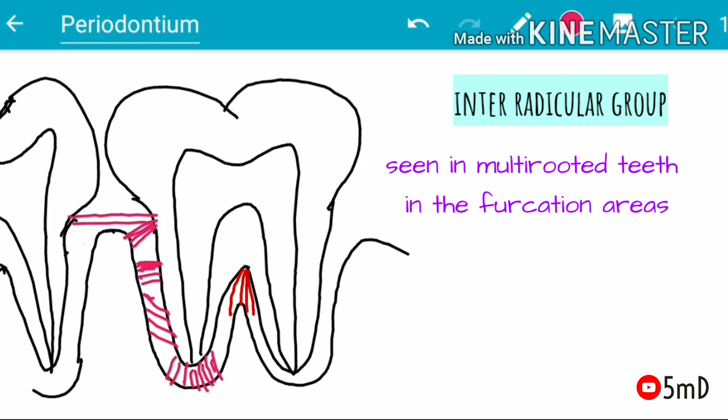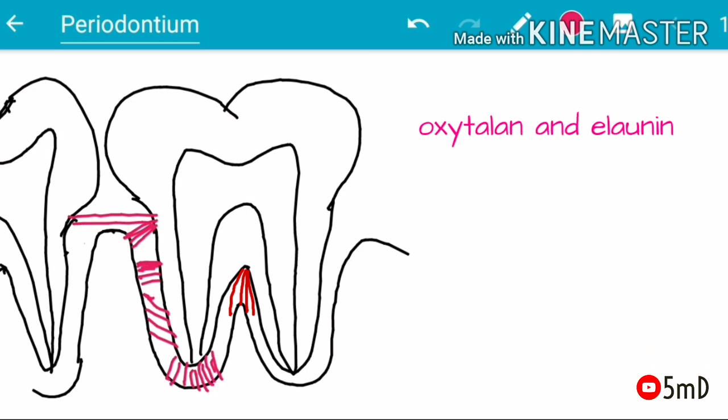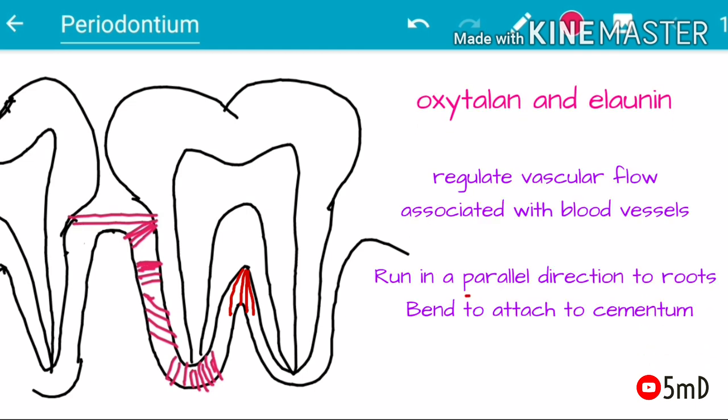Apart from these principal periodontal ligament fibers, there are two immature forms of elastin fibers: oxytalin and eulonin. These fibers are associated with blood vessels and regulate vascular flow. They run parallel to the root surface in a vertical direction and bend towards the cervical third to attach to the cementum.